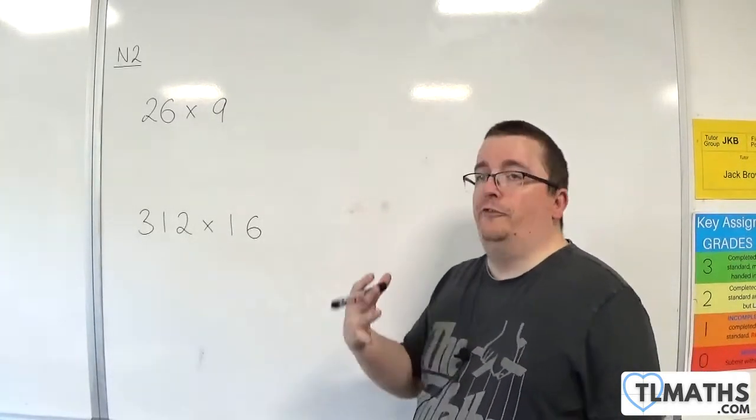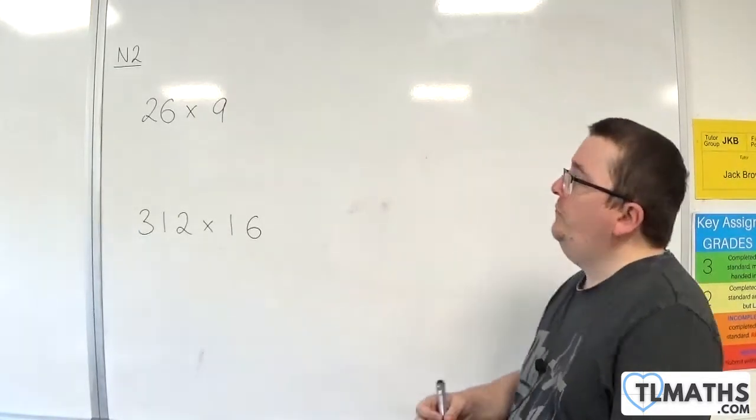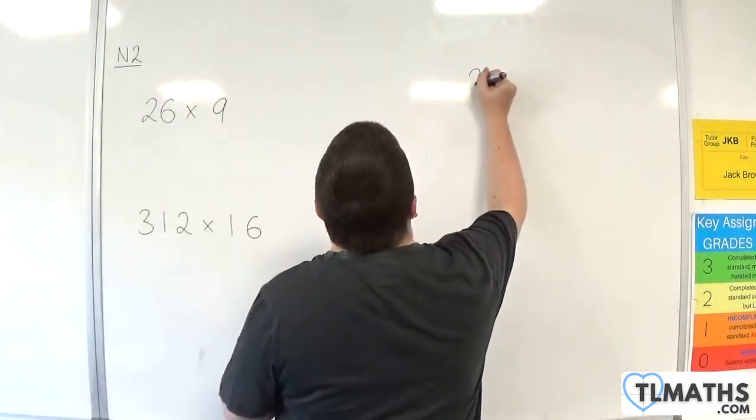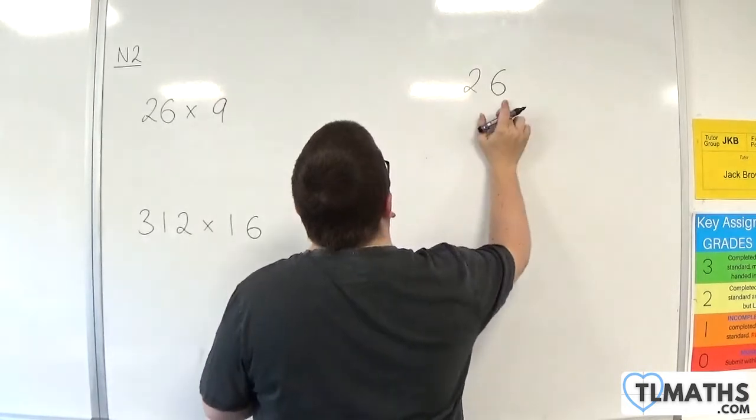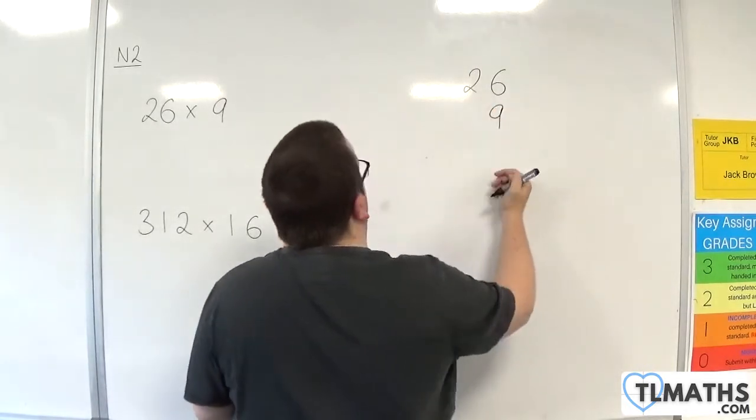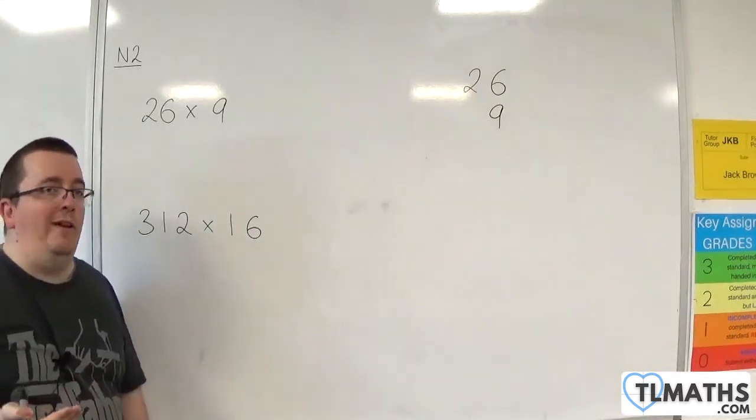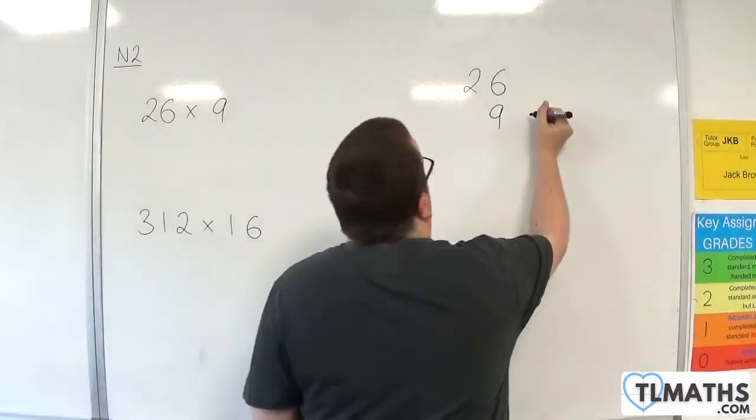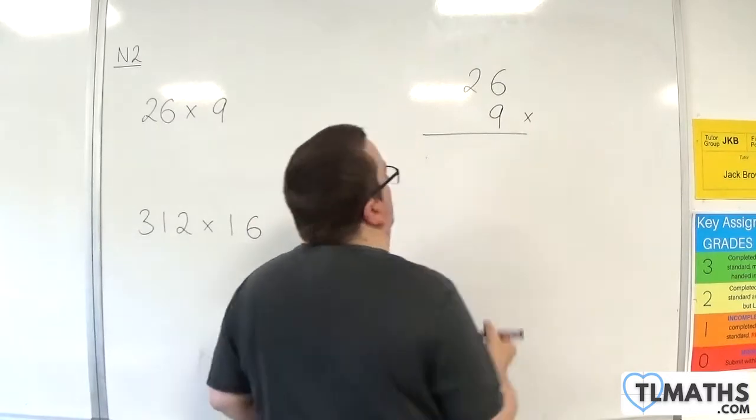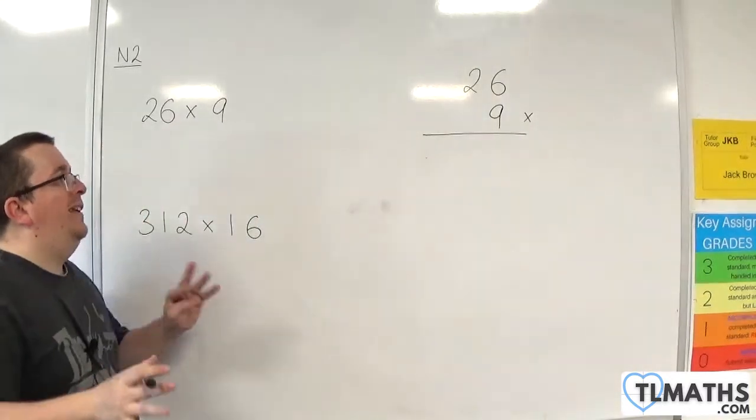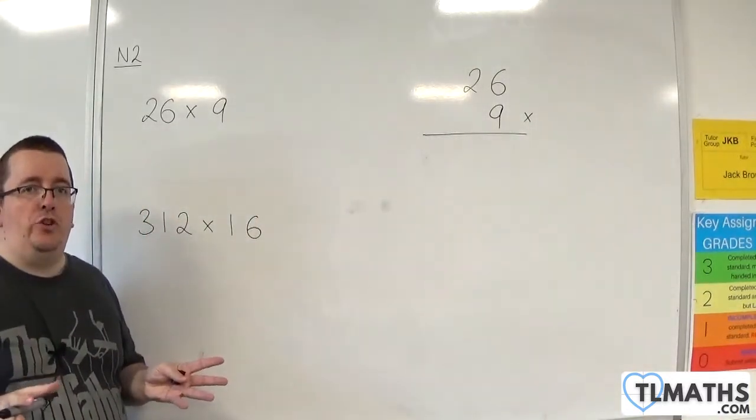But I'm going to show you how to formally lay it out. So 26 times 9. We write the larger number at the top, small at the bottom, making sure the units and tens column line up. Put a times sign and then draw a line. So layout-wise, it looks very similar to addition and subtraction.